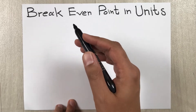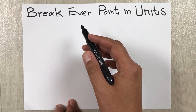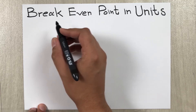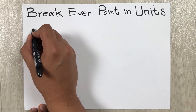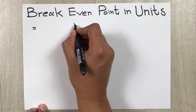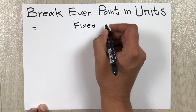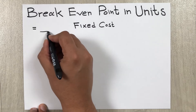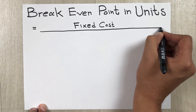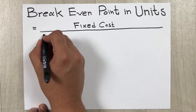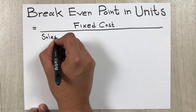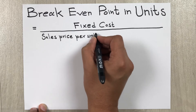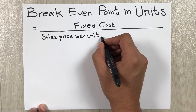Hello guys, in today's video I am going to show you how to calculate break-even point in units. The formula to find out the break-even point in units is equal to fixed cost divided by sales price per unit minus variable cost per unit.